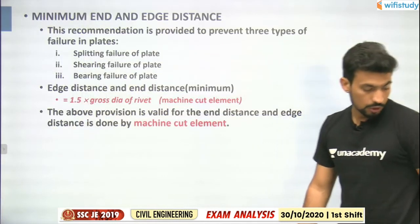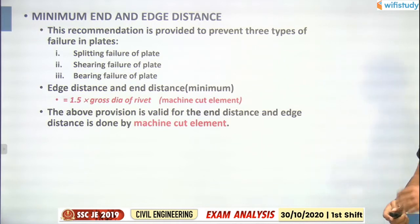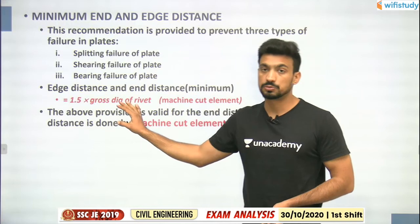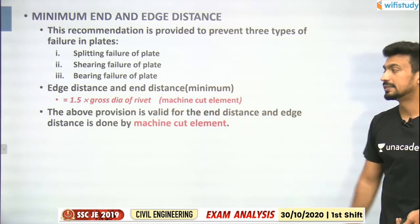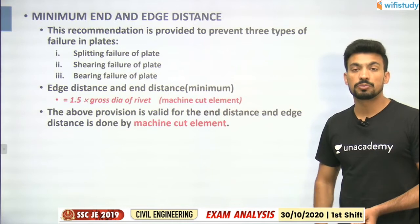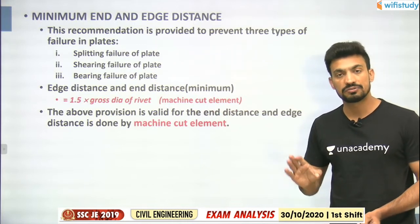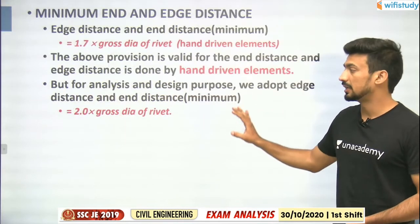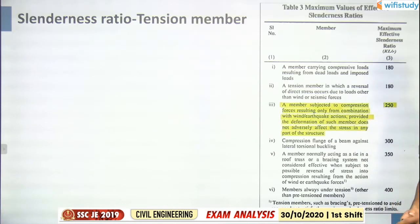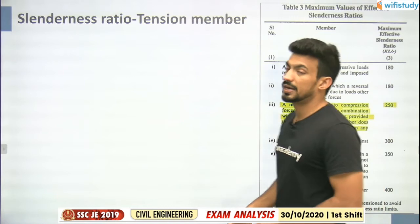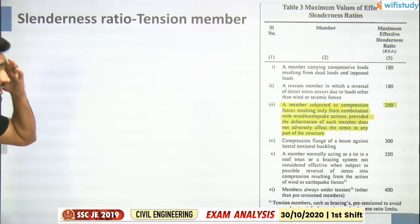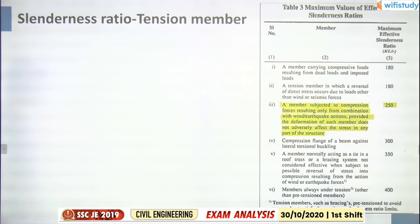Next - minimum end and edge distance. This is a related question. For machine cut elements, and hand driven - 1.7 generally for design purposes, twice the gross diameter. Consider minimum edge and end distance. For slenderness ratio of tension members, there are 6 cases, 3-4 already covered.